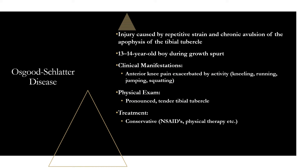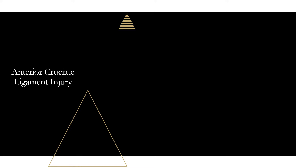ACL injury: the ACL is the most commonly injured knee ligament. Most tears occur from a non-contact pivoting injury — a running or jumping athlete who suddenly stops and changes direction, pivots, or lands involving rotation and valgus stress of the knee. The tibia slides anteriorly on the femur and the ACL tears. Classic history: a pop in the knee followed by acute swelling — hemarthrosis. Up to 77% of patients with acute traumatic knee hemarthrosis have an ACL injury. Remember: pop and swell.